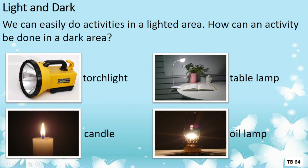In a dark area you may use a torch light, a candle flame, a table lamp, or an oil lamp to light up the area. Remember — the torch is a lamp source, while the candle and oil lamp are fire sources. You may use these four items to light up a dark area.